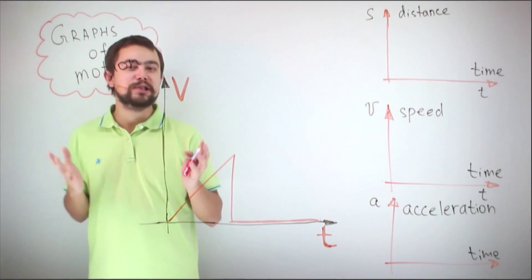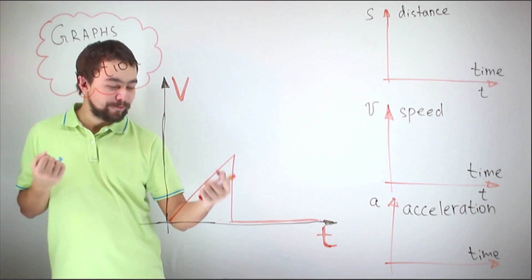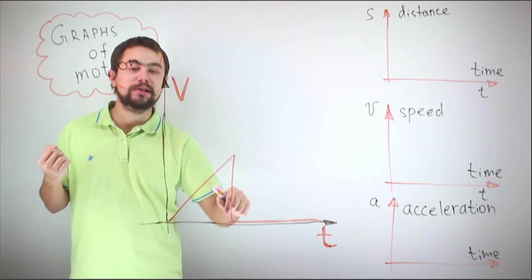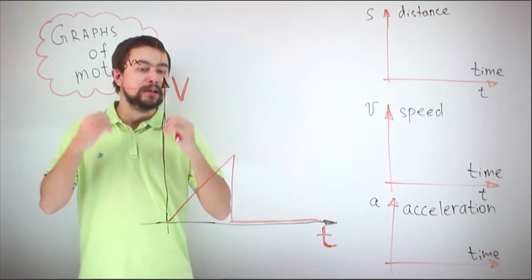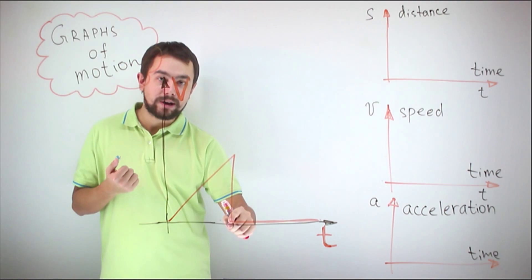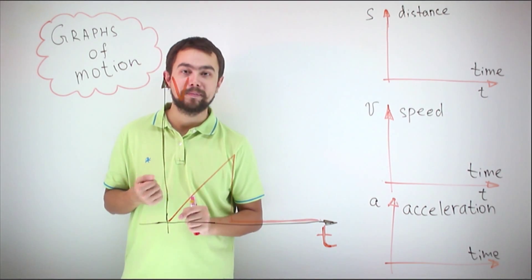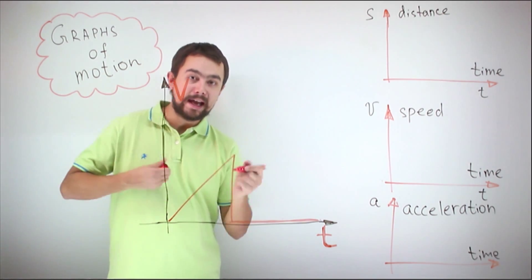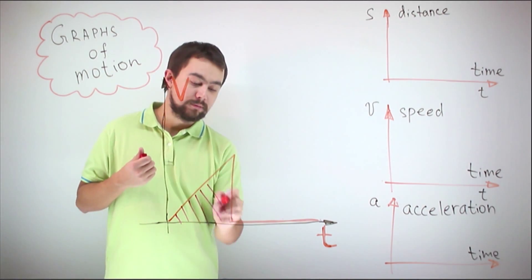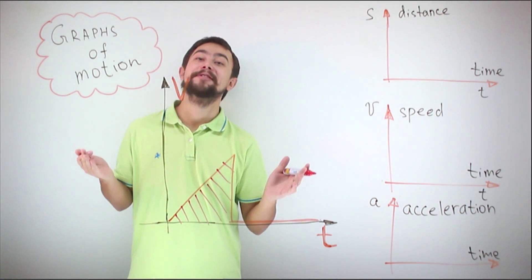Imagine we throw a water bomb from a tall building. First the speed increases, and then it drops to zero since the water bomb hits the ground. Once it hits the ground, it remains stationary, so the speed is zero. By the way, the area under this graph is equal to the height of the building.